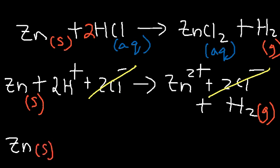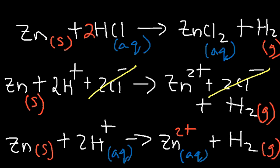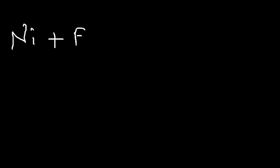What remains is the net ionic equation: metallic zinc reacts with H⁺ ions in aqueous phase, producing the Zn²⁺ cation in aqueous phase and hydrogen gas H₂. That is the balanced net ionic equation for this single replacement reaction.